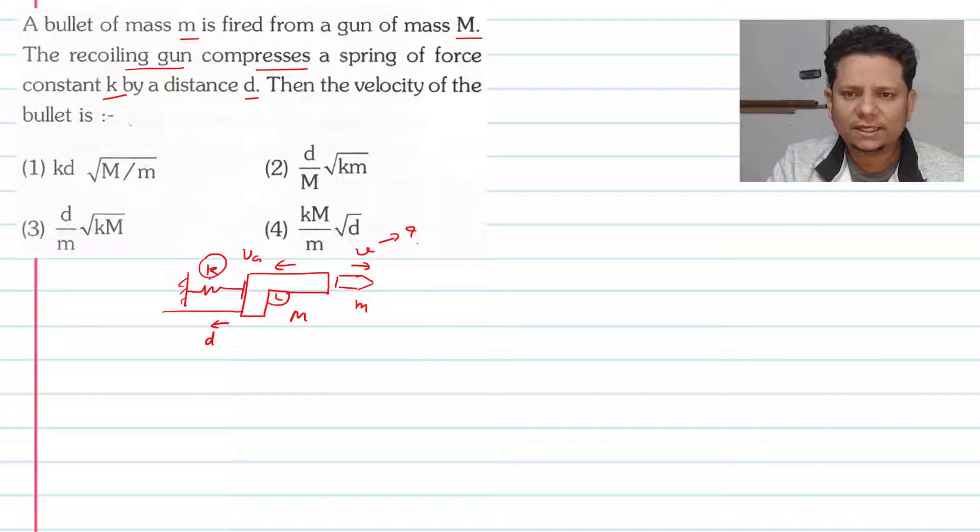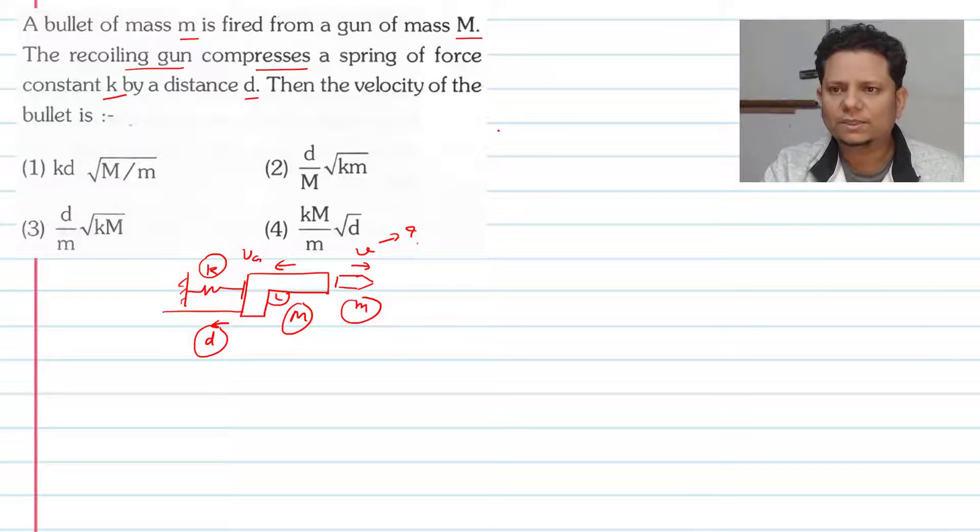The answer is k, d, capital M, small m. The data is given by m, capital M, k and d. We can tell the value of v. Now simple question.